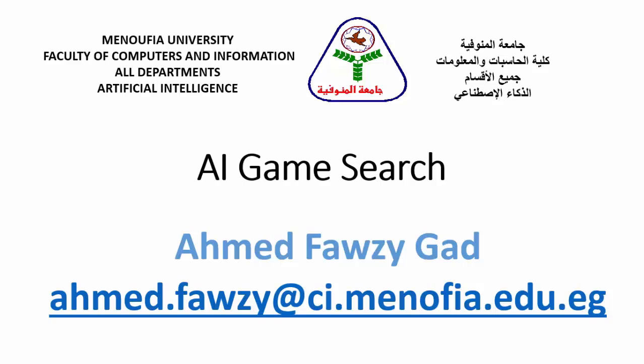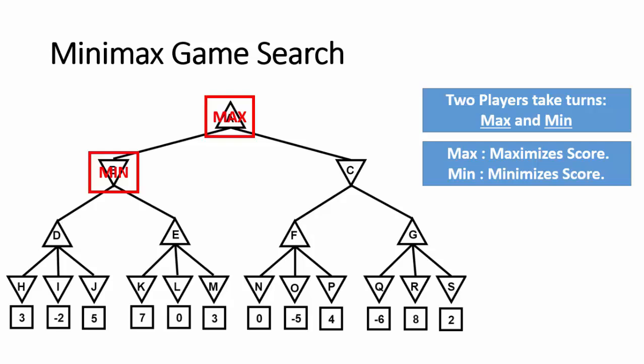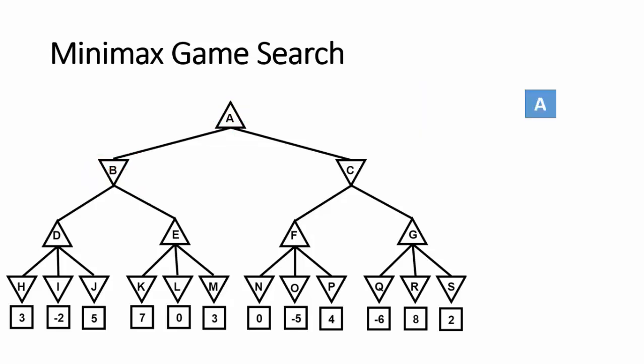This video is a simple tutorial about one of the game search strategies in artificial intelligence called Minimax. Minimax game search uses two players which are called Max and Min. Max tries to maximize its score and Min tries to minimize its score. This game search tries to maximize the Max player score because it represents us — we are playing as Max. We also want to minimize the opponent score, which is represented as the Min player.